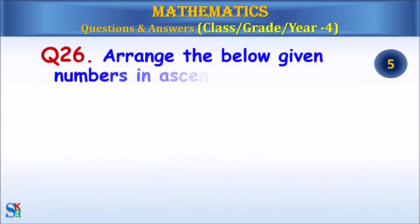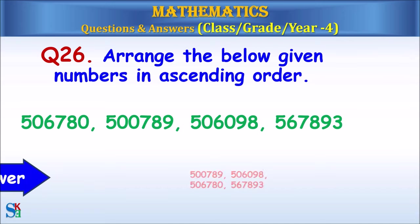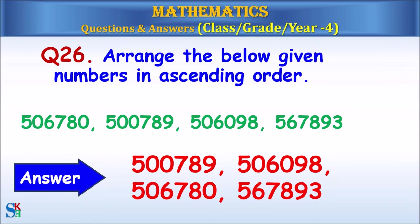Question 26: Arrange the given numbers in ascending order. The answer is 500,789, 506,098, 506,780 and 567,893.